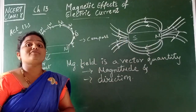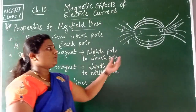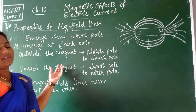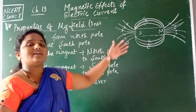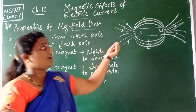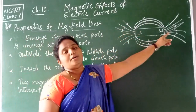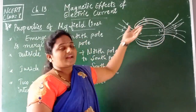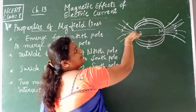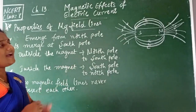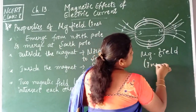Now we will discuss the important properties of magnetic field lines. By conventional method, outside the bar magnet, the magnetic field lines originate or emerge from the north pole and merge at the south pole. Inside the bar magnet, they move from the south pole to the north pole. Therefore, the magnetic field lines are closed curves.